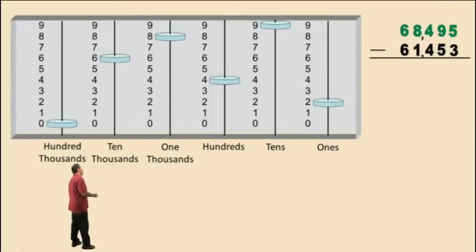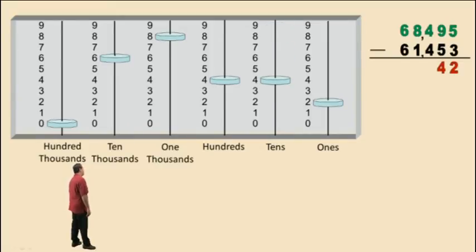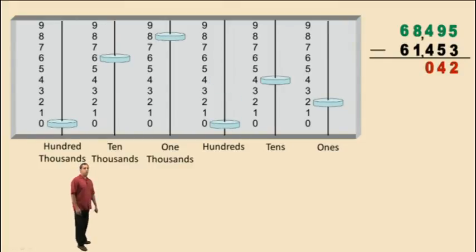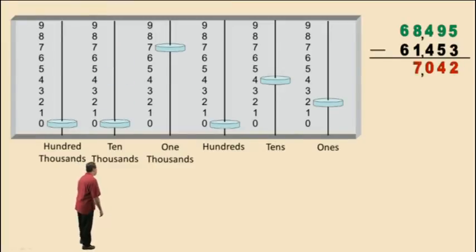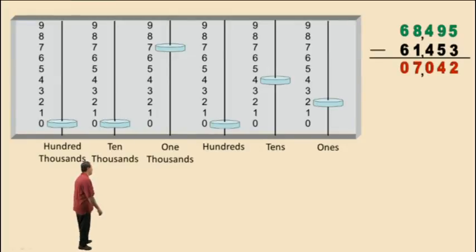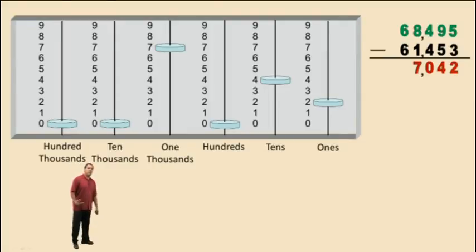Let's start with our ones column. 5 subtract 3 is 2. Let's go to our tens column. 9 subtract 5 is 4. Let's go to our hundreds column. 4 subtract 4 is 0 — we do not have any hundreds in our result. In our thousands column, 8 subtract 1 is 7. And in our ten-thousands column, 6 subtract 6 is 0. We have 0 ten-thousands in our answer; we do not have to put the 0 there, so we'll take it off. Our result is 7,042.